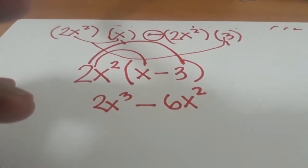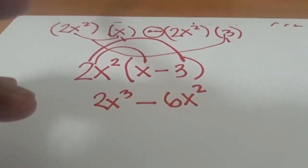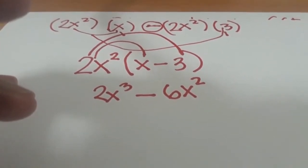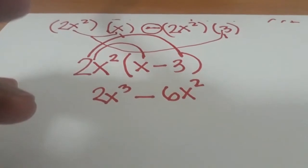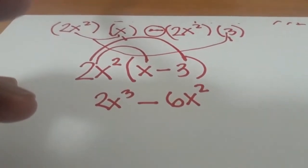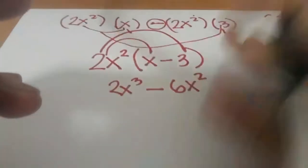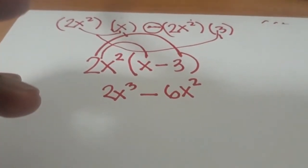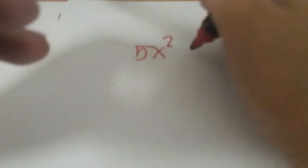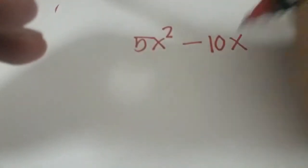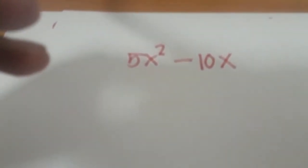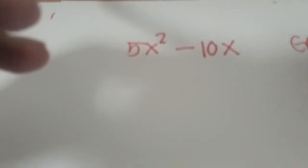Now there is a faster method when you're already used to getting the greatest common factor just by looking at it. You can directly do it by dividing the equation and then multiplying it to the GCF. For example, 5x² - 10x. Just by looking at it, we can see that our greatest common factor is 5x.